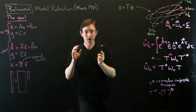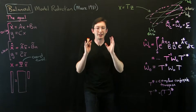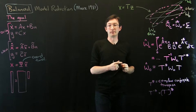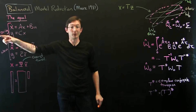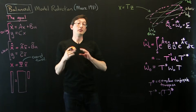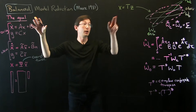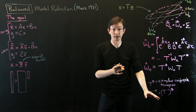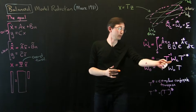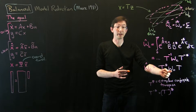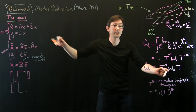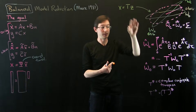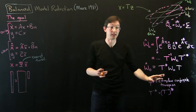Welcome back. We're finally ready to design a coordinate transformation T that balances our Gramians. So up until now we've taken this original system and shown how those dynamics transform under a coordinate transformation from x to z. We've also looked at how the controllability and observability Gramians change — these are my Gramians in the original x coordinates, and they transform into new hat Gramians in z coordinates according to this set of formulas.